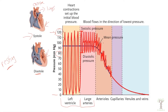As blood flows from the arteries into the arterioles, there is a significant drop in pressure. Arterioles play a very significant role in regulating pressure in different tissues and can reroute blood to different tissues. The capillaries are where exchange occurs, and pressure is lowest in the veins and venules before blood returns to the heart. Blood always flows toward lower and lower pressure.